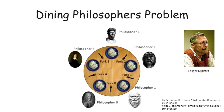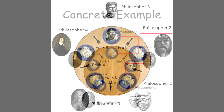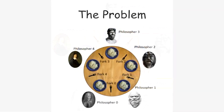Let's make this problem clearer by giving a concrete example. Assume that philosopher two wants to eat. He must use fork one and fork two since they are the closest to him. Philosopher one and philosopher three need to wait while philosopher two is eating, because philosopher one requires fork one and philosopher three requires fork two. As soon as philosopher two finishes, they can start eating.